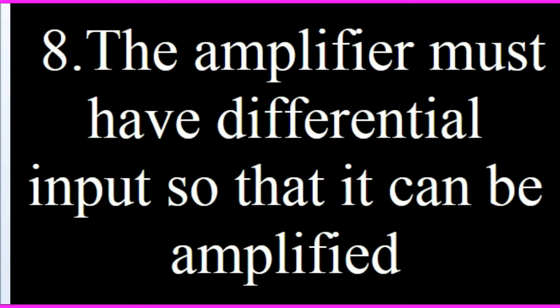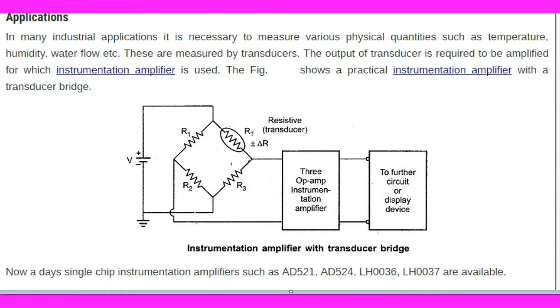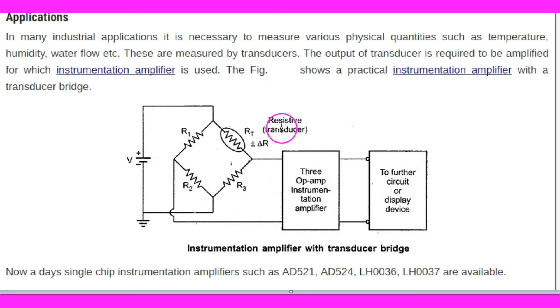The instrumentation amplifier should have two different inputs. If the inputs become equal, then the instrumentation amplifier will give zero output, so there should be some differential signal at the input. The instrumentation amplifier measures physical quantities like temperature, humidity, water, and flow by means of transducers, but the output of the transducer is quite low and it is enhanced by the instrumentation amplifier.